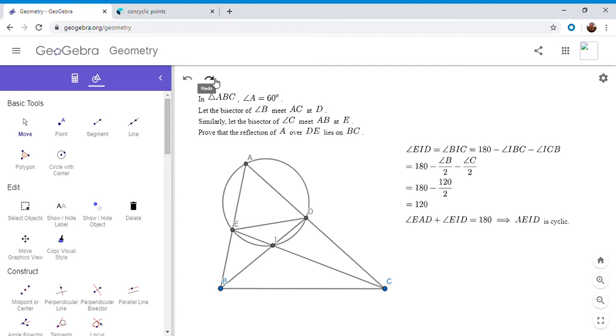I'm going to draw in that circle. So what do we do from here? The problem says we want to show the reflection of A over DE lies on BC. Let's say F were the reflection of A over DE, and let's say it really did lie on BC. In that case, we'd have to have AD equal to DF. Not only that, they'd be intercepted by equal angles because angle ABD equals angle DBF. If equal segments are intersected by equal angles, that would mean ADFB would have to be cyclic.